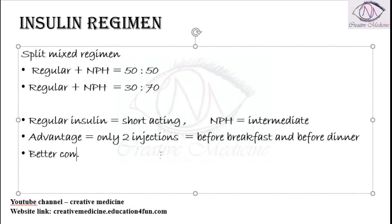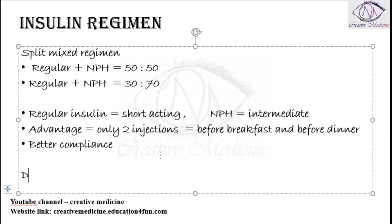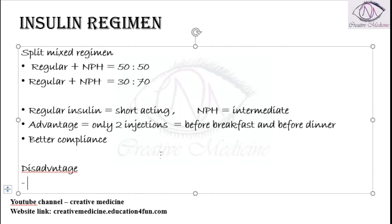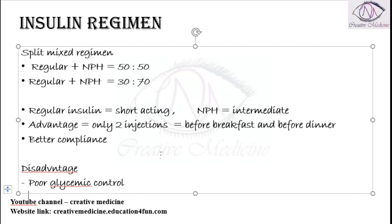Because there are only two injections, there is better compliance — the patient takes it properly. The disadvantage is that using this short-acting and intermediate insulin may result in poor glycemic control in certain patients.